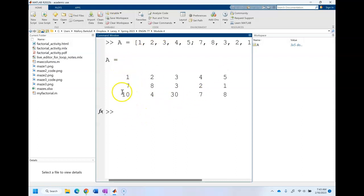I hope when I run my function my output is ten, eight, thirty, seven, eight. So let's try it out. Maxcolumns of A: ten, eight, thirty, seven, eight. Great.